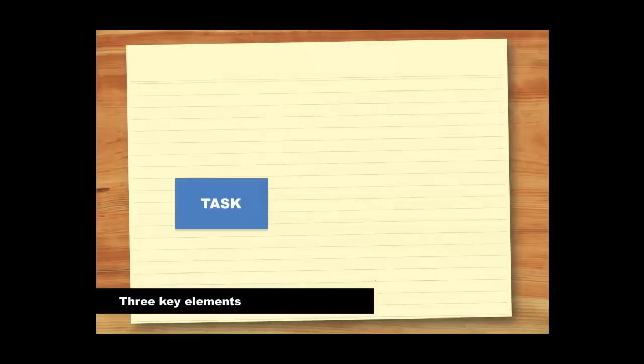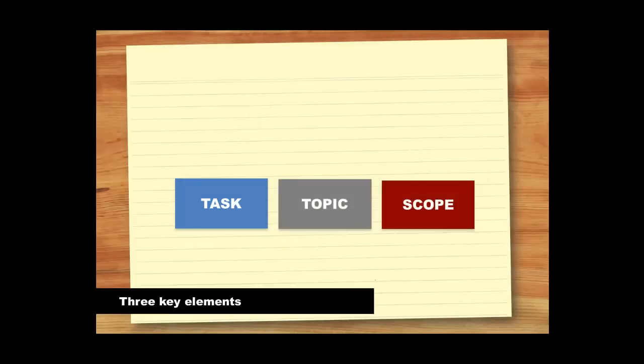So once you understand exactly the task you've been set, then you can look at the topic and scope of the assignment in more detail. The topic is usually the easiest thing to spot, and because it's so easy to spot, we often fall into the trap of rushing off to start researching and writing without paying attention to what the assignment is really asking us to do.